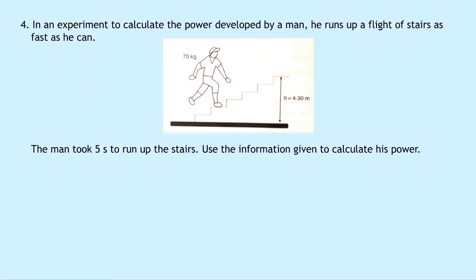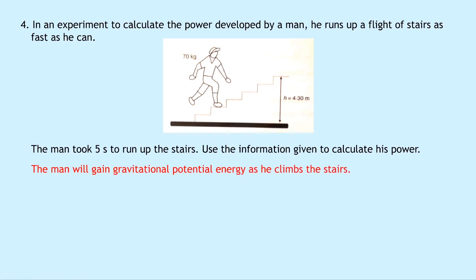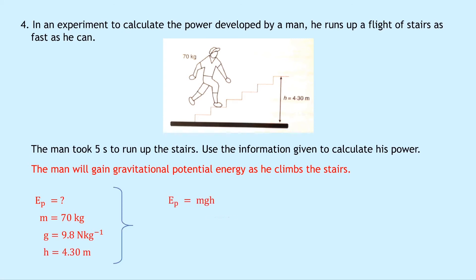Question 4 says that in an experiment to calculate the power developed by a man, he runs up a flight of stairs as fast as he can, taking 5 seconds. From the picture, the mass is 70 kilograms and the height of the stairs is 4.30 meters. The man gains gravitational potential energy as he climbs. Using EP equals mgh, we get 70 times 9.8 times 4.30, giving 2,949.8 joules.